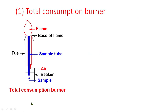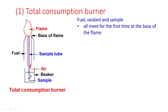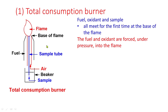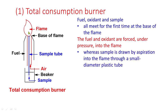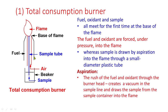In the total consumption burner, fuel, oxidant, and the sample all meet for the first time at the base of the flame. Fuel and oxidant are forced under pressure into the flame, where the sample is drawn by aspiration through a small diameter plastic tube. The rush of fuel and oxidant through the burner head creates a vacuum in the sample line and draws the sample from the sample container into the flame.